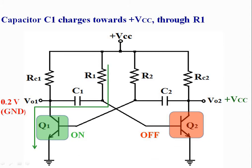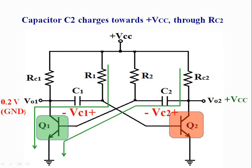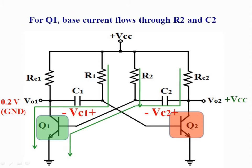Capacitor C1 charges towards plus VCC through resistor R1, with the polarity of voltage across C1 as shown. So the voltage builds in such a way that the base of transistor Q2 is becoming more and more positive with respect to the collector of transistor Q1, or with respect to ground. Capacitor C2 charges towards plus VCC through resistance RC2. For transistor Q1, base current flows through R2 and C2.